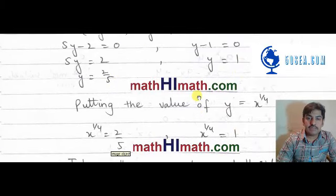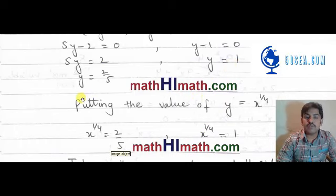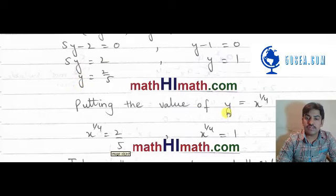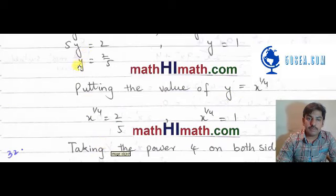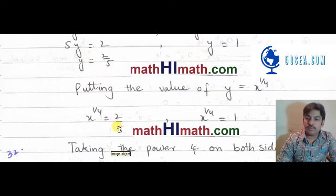اب basically ہماری value جو تھی وہ x کی form میں تھی — y تو ہم نے اپنی convenience کے لیے لیا تھا۔ تو ہم یہاں پہ y کی value کو واپس put کر دیتے ہیں۔ y ہم نے لیا تھا y is equal to x raised to power 1 over 4۔ تو یہاں پہ x کی power 1 over 4 is equal to 2 over 5 آ جائے گا، اور یہاں x کی power 1 over 4 is equal to 1 آ جائے گا۔